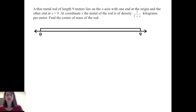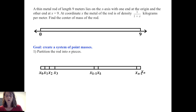A thin metal rod of length 9 meters lies on the x-axis with one end at the origin and the other end at x equals 9. At coordinate x, the metal of the rod is of density 1 over 1 plus x kilograms per meter. Find the center of mass of the rod. Our goal is to create a system of point masses.